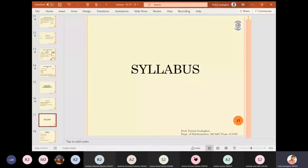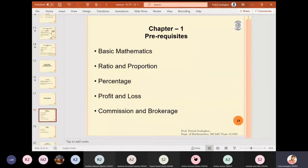Now let us discuss quickly what is the syllabus of Business Mathematics and Statistics. The first chapter is Prerequisites, which is basic mathematics, ratio and proportion, percentage, profit and loss, commission and brokerage.